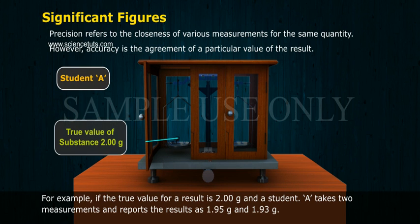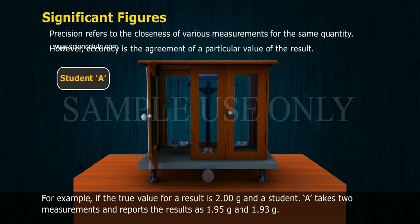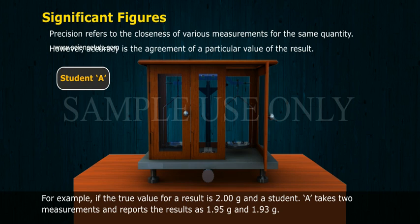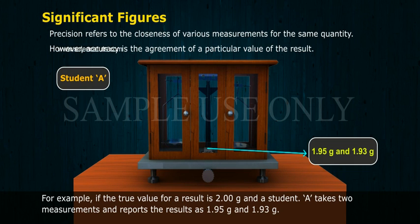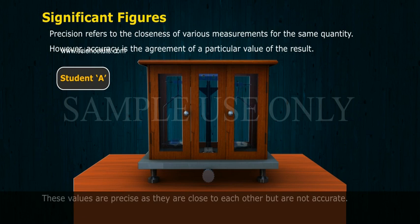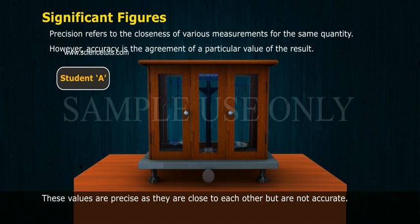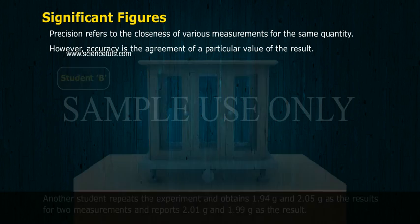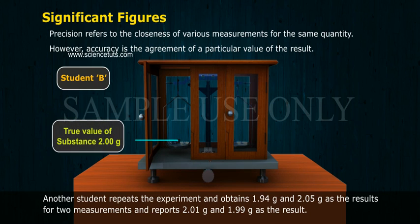For example, if the true value for a result is 2.00 grams and Student A takes two measurements and reports the results as 1.95 grams and 1.93 grams, these values are precise as they are close to each other but are not accurate.